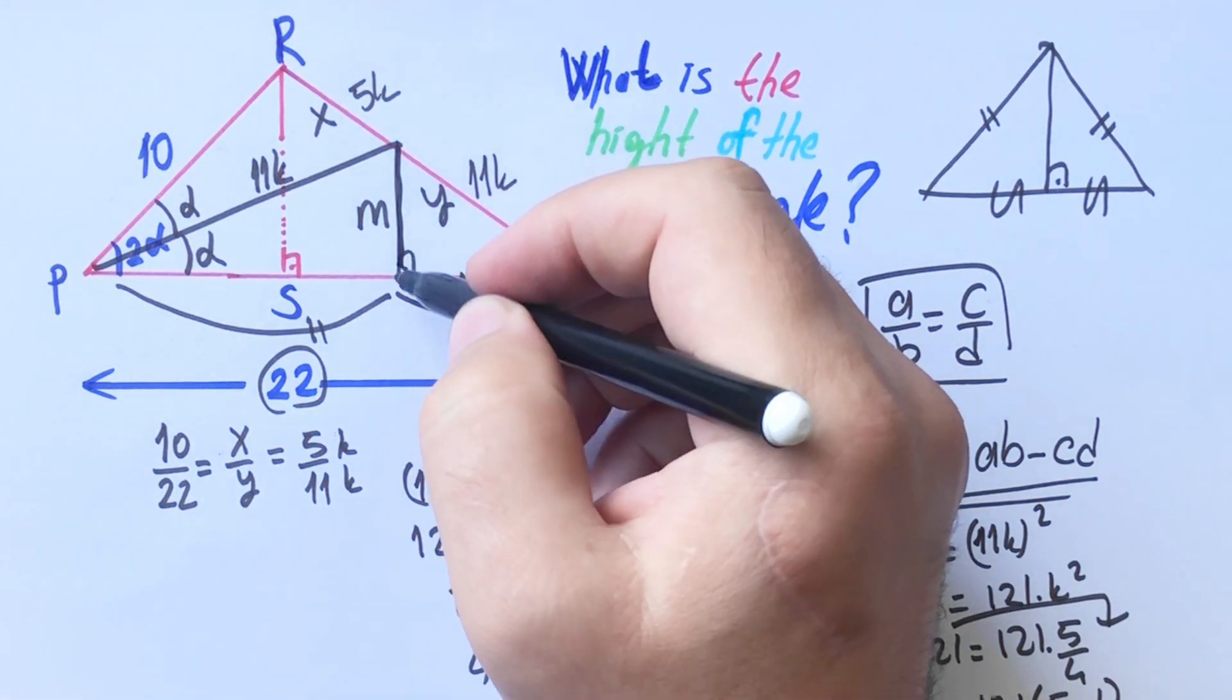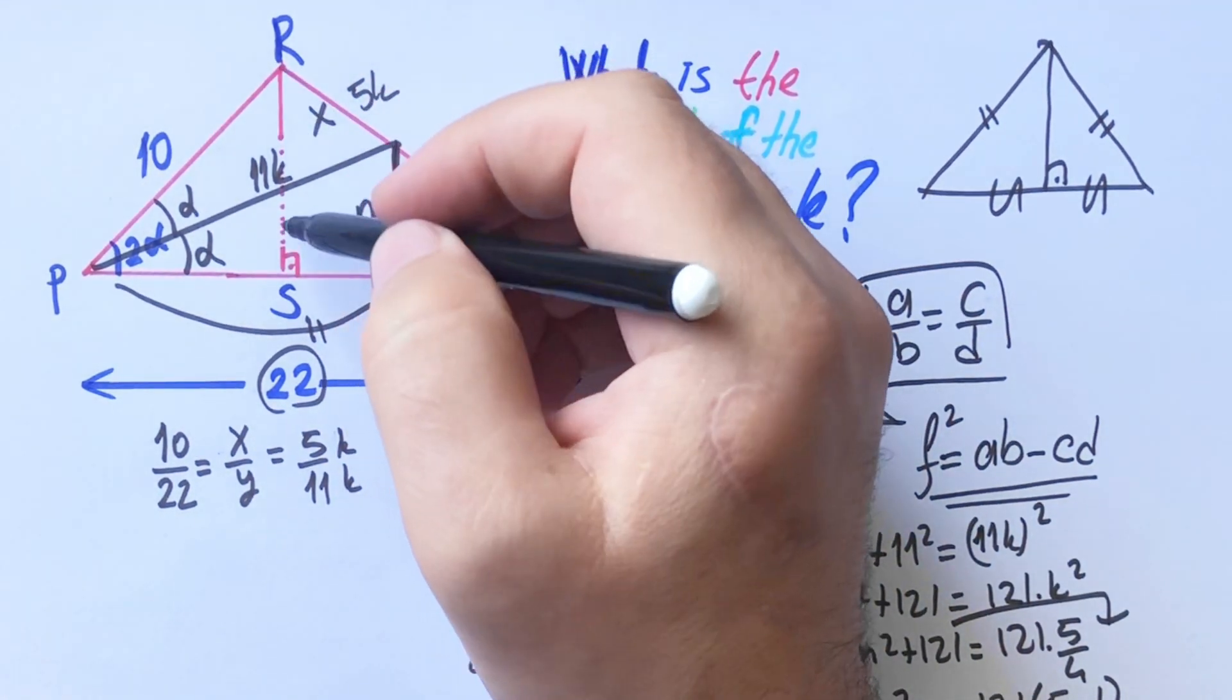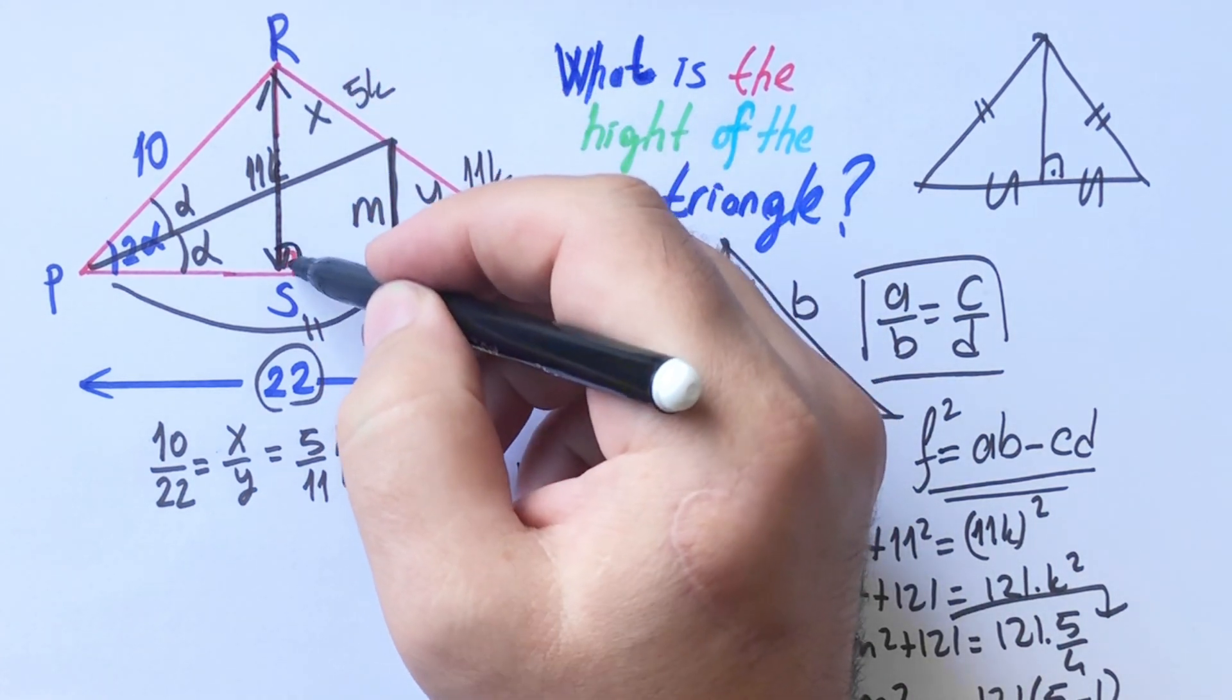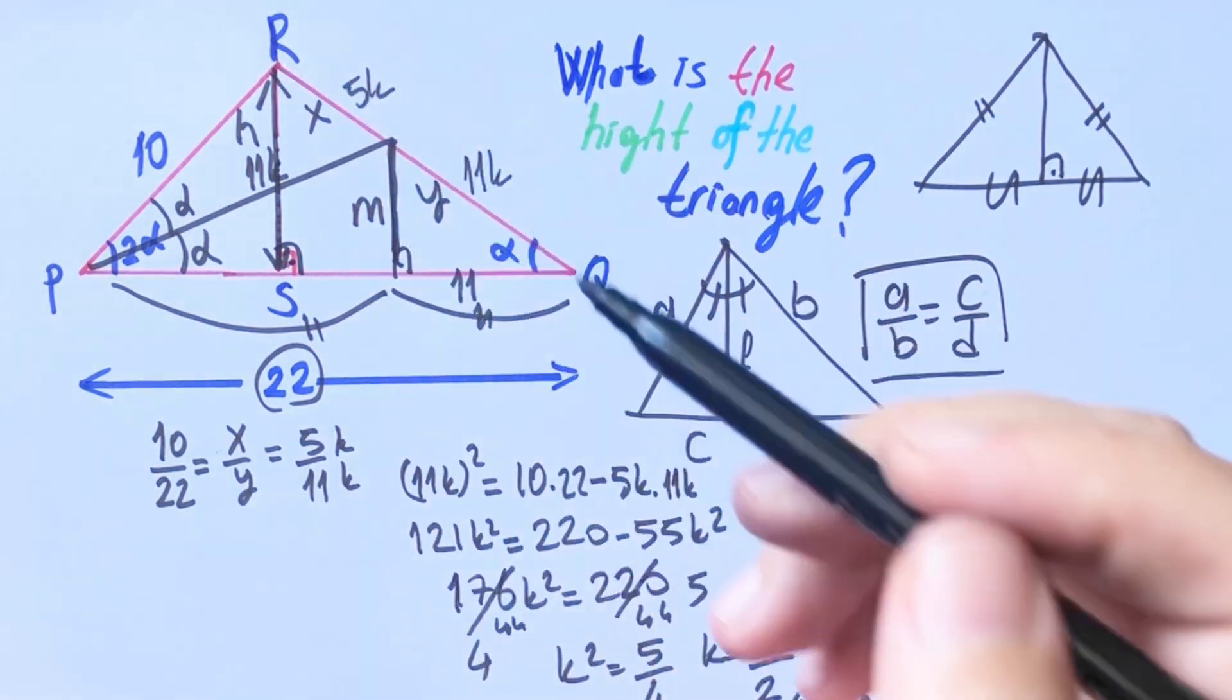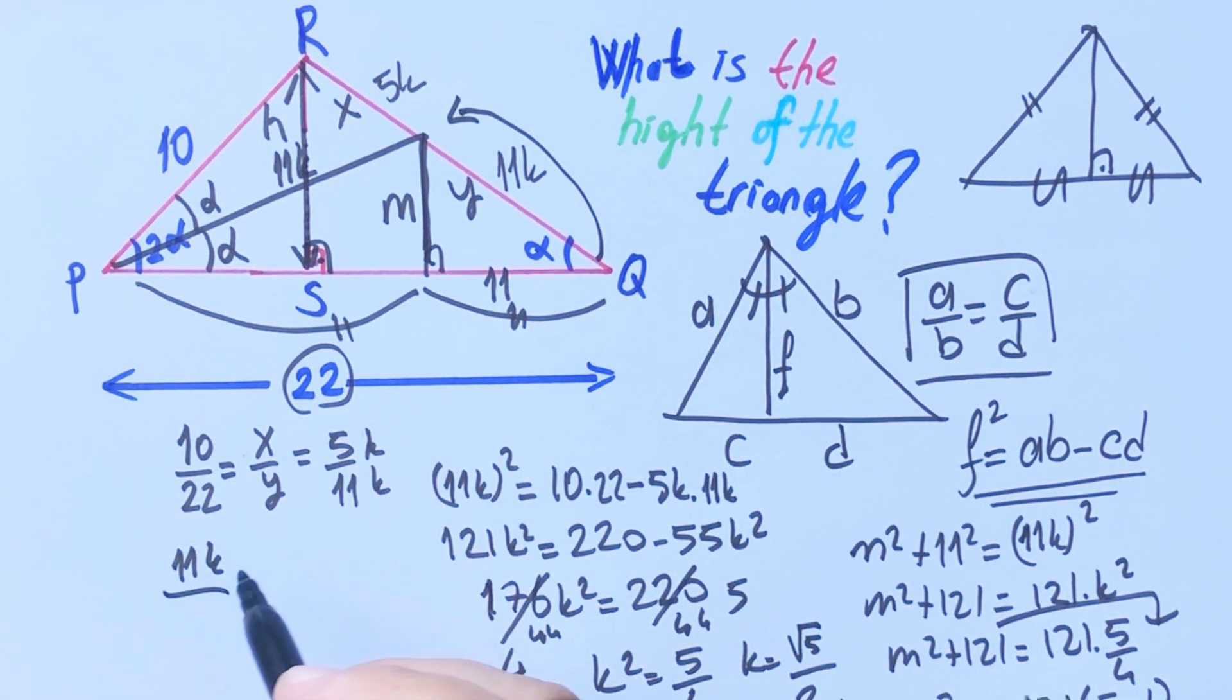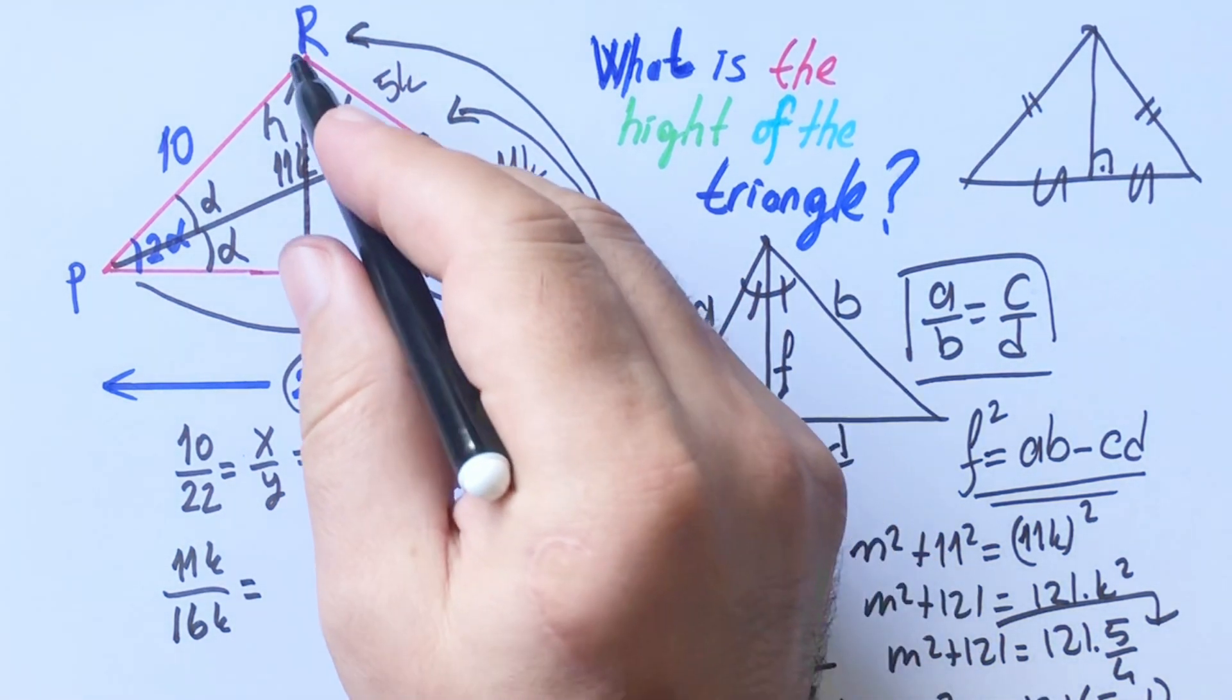We know that ratio of M over RS, this length has already been asked. Let's call here H unit. In this triangle, if we apply similar ratio, 11 k over 16 k is equal M over H, right?